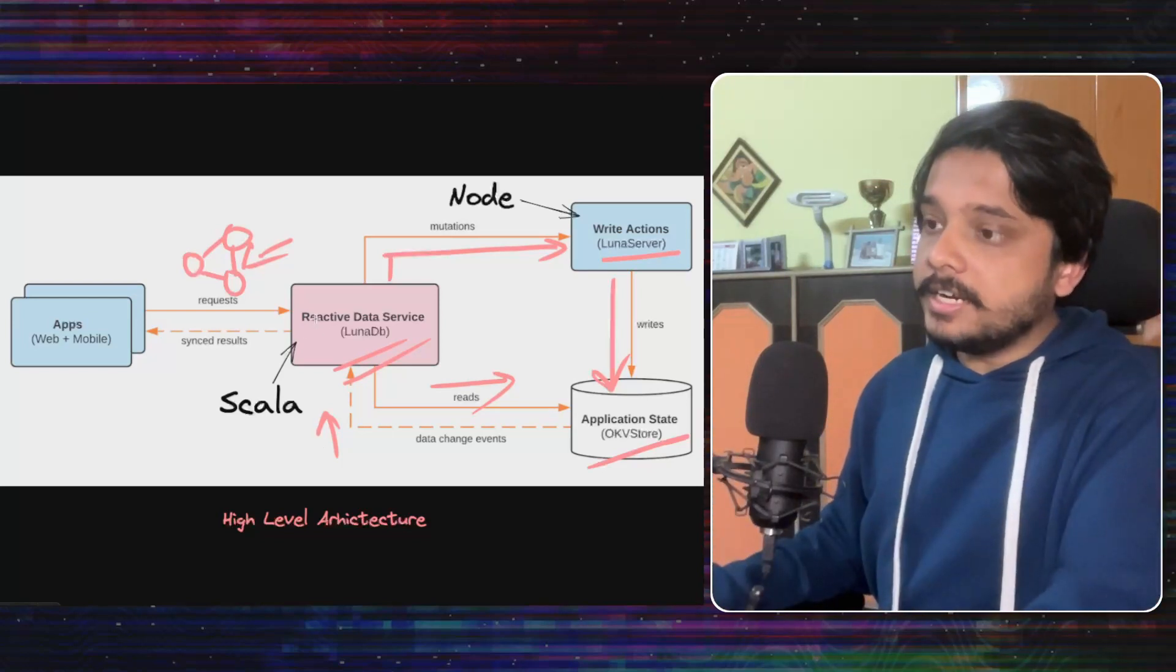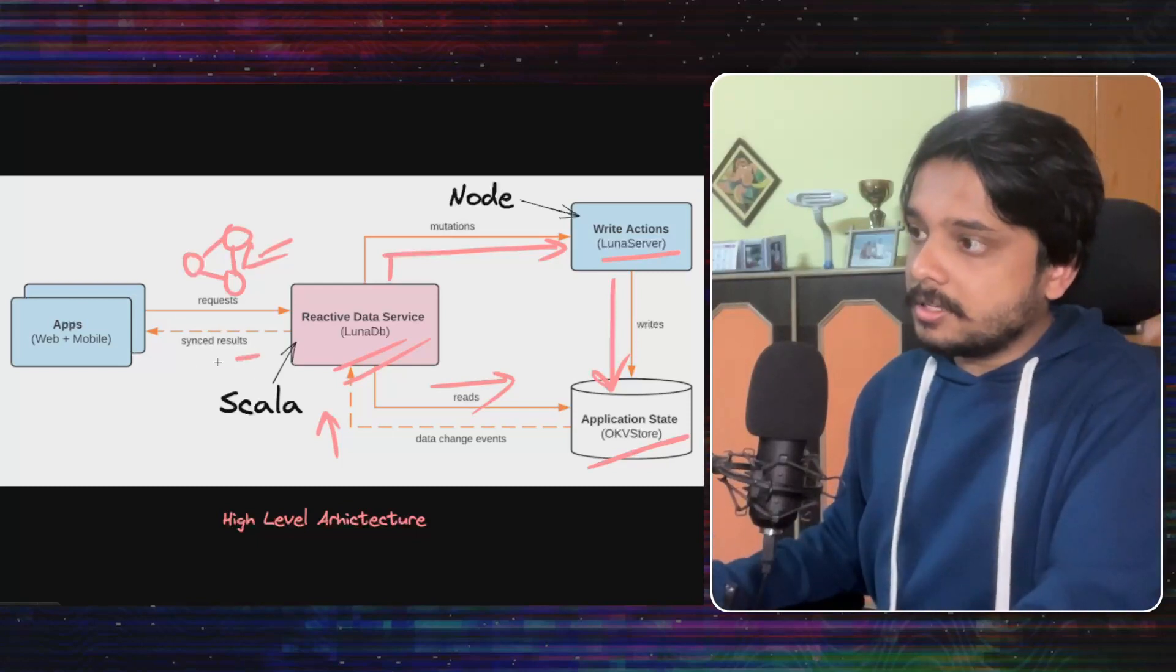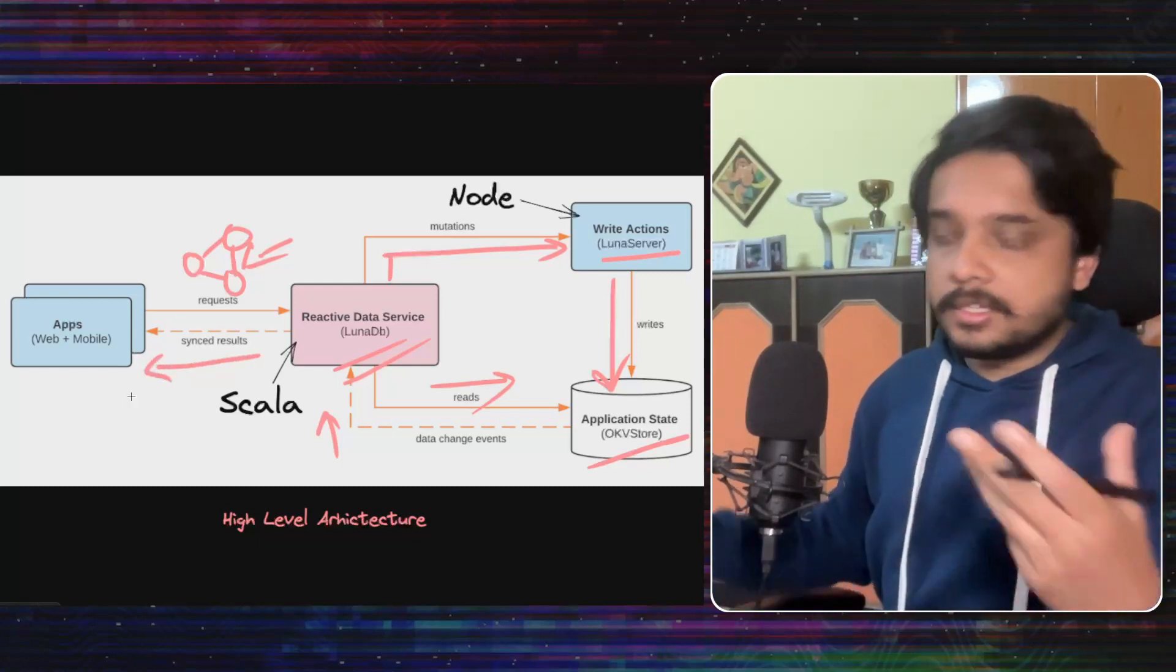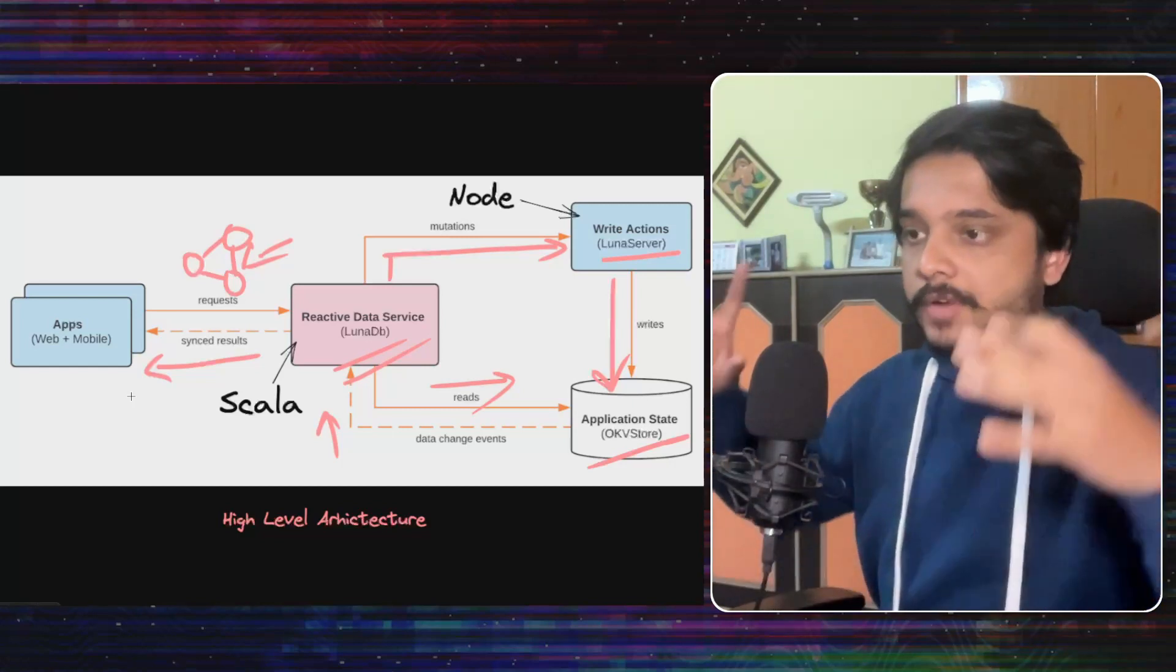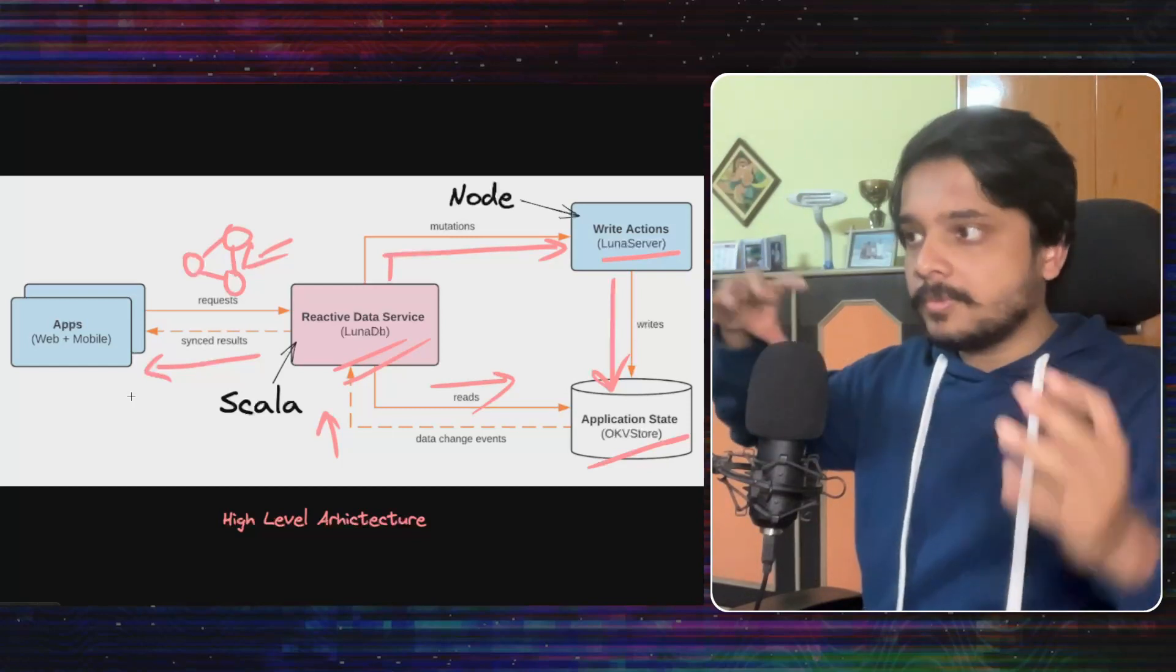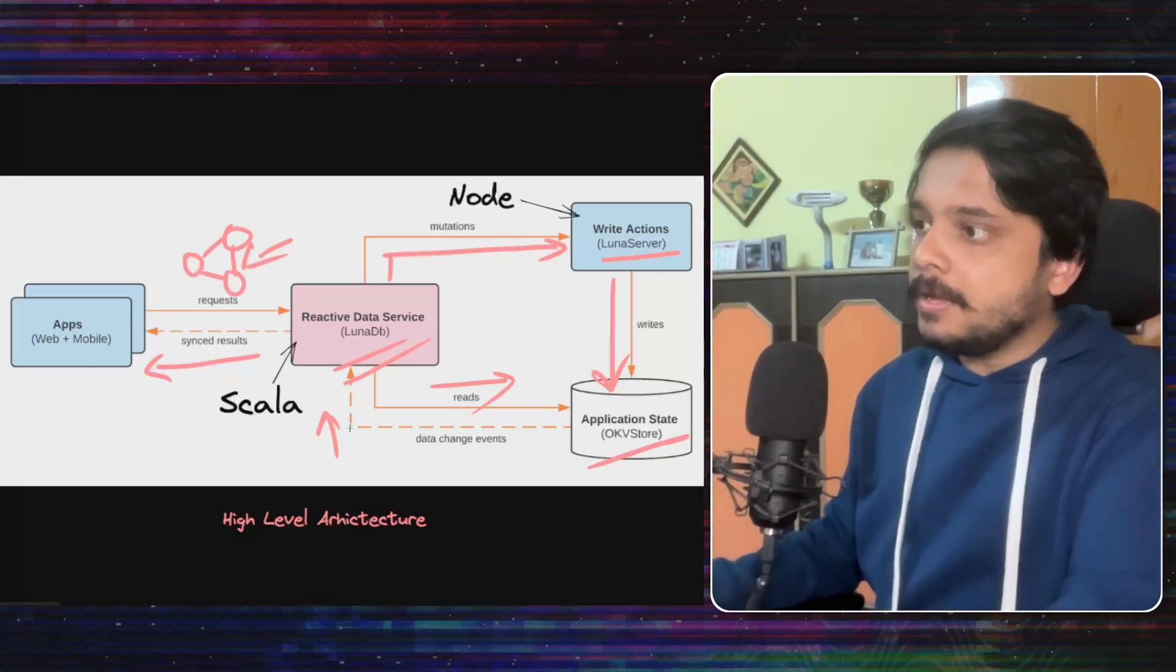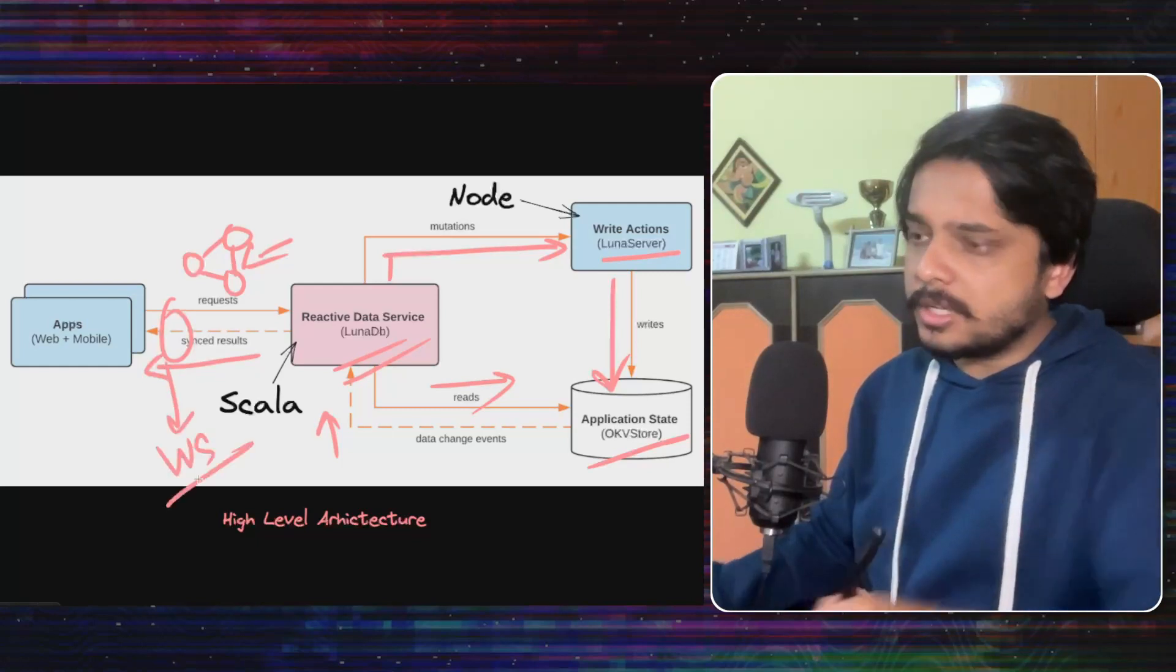So when it reads from the OKVStore that there is a new comment, it sends it to all other interested clients, whoever has subscribed to that data or whoever has subscribed to the data from that task, it is synced to those clients. Now, this might be happening by some WebSockets kind of a network.